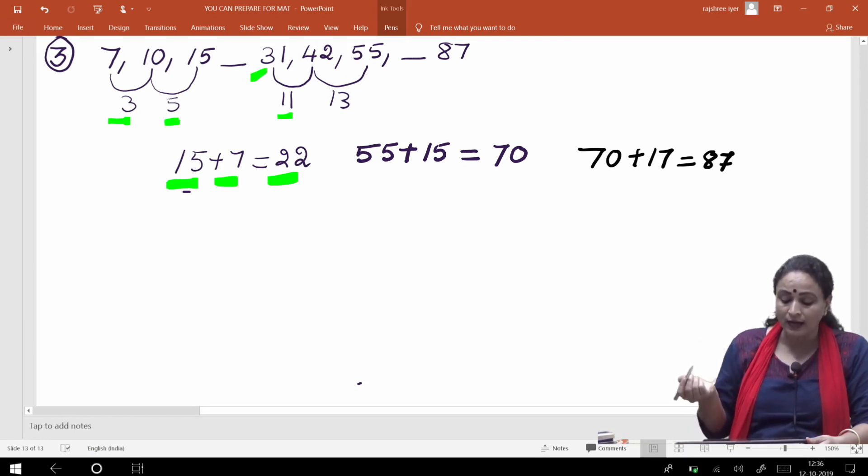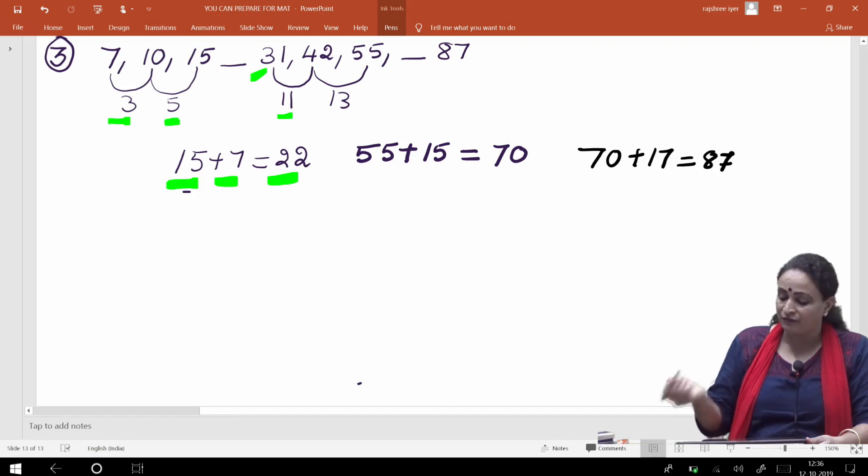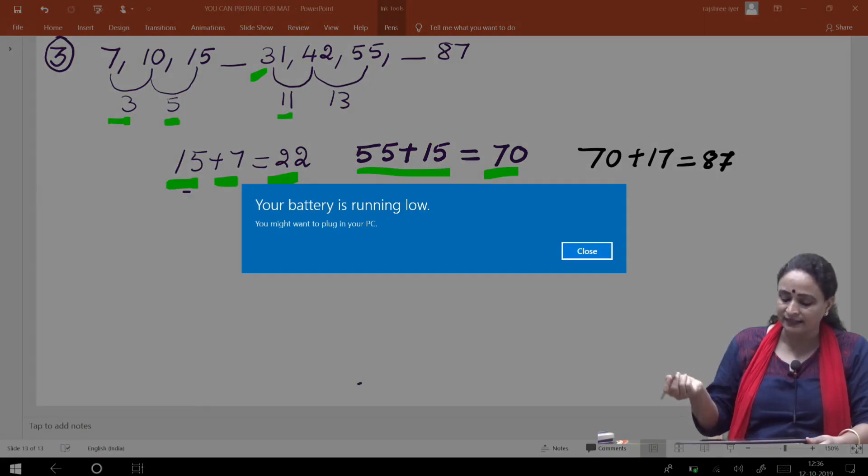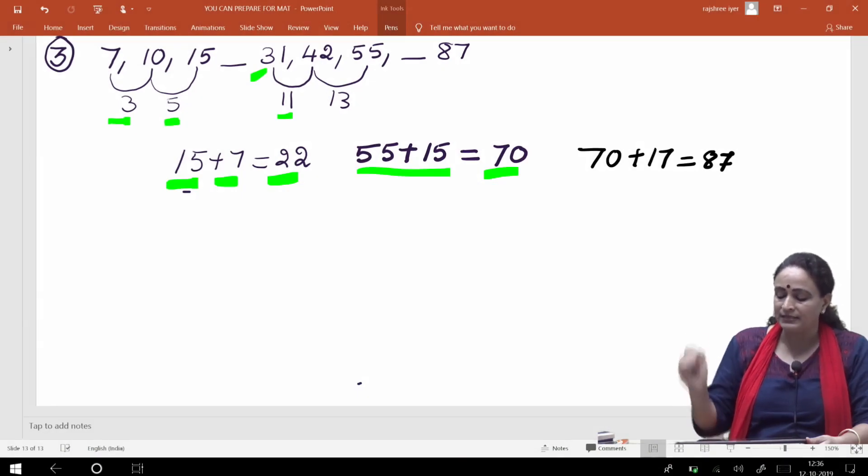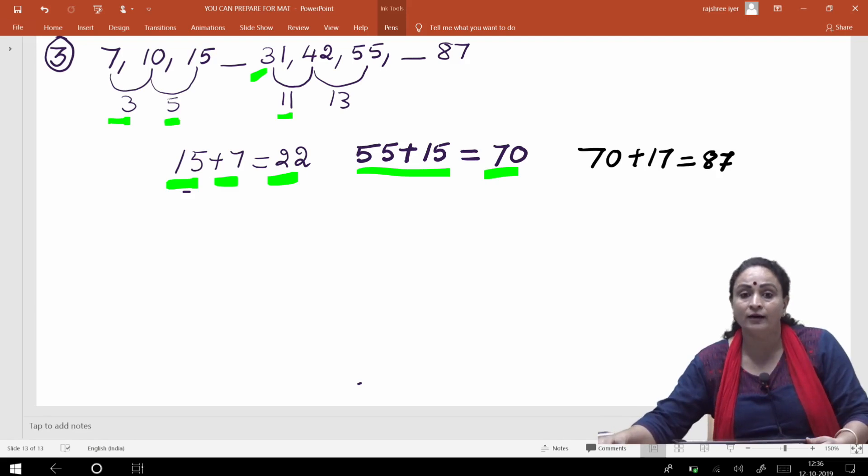Phir, uske baad kya karna hoga? Aapko 31 mein 11 add karna padega, 42, yes? Hamara sahih hai. 42 mein aap phir 13 add kijiye, 55 aa raha hai, aur 55 mein aapko 15 add karni padegi. Toh aapka jo agla jo filling the blanks hai, usmein aayega 70. Toh chaliye agla add karke dekhte hain. So that is 70 plus 17 kitna aayega? That is 87, haan hamara number sahih hai. So this is the way, how you work out the pattern in working out the series questions.